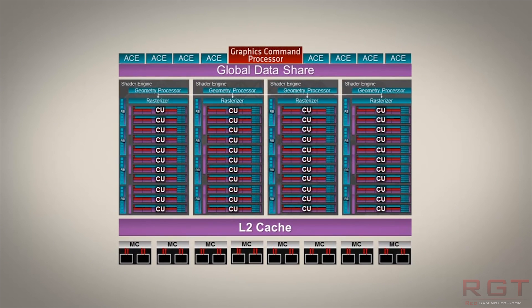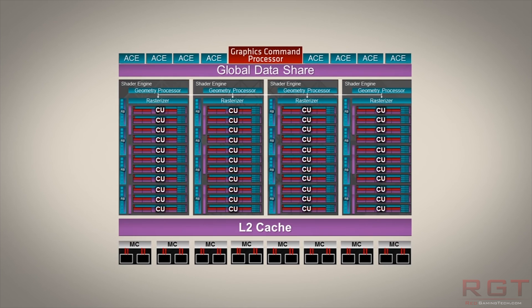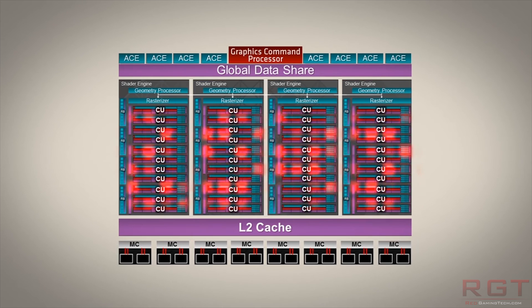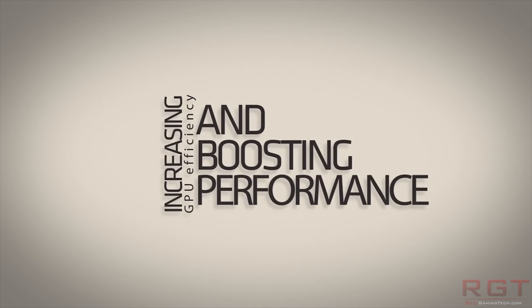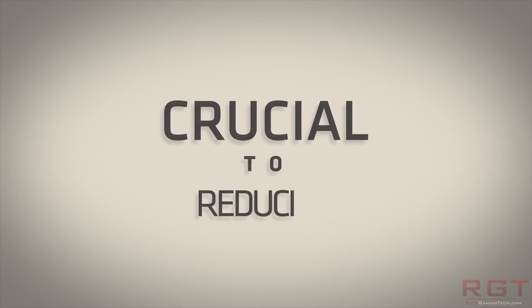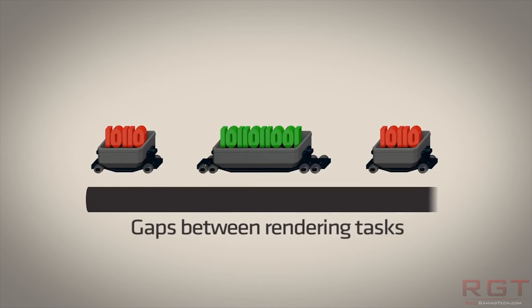Then you have one render back end and four texture blocks. Render back ends are comprised of multiple ROPs. There are 16 ROPs per back end, meaning a total of 64 ROPs across the GPU, because 16 times 4 is 64 ROPs.